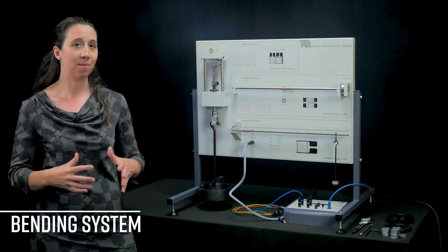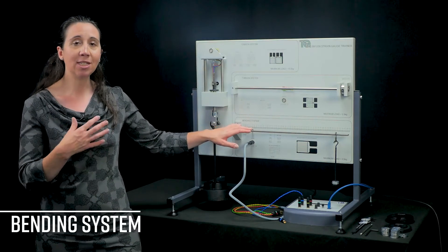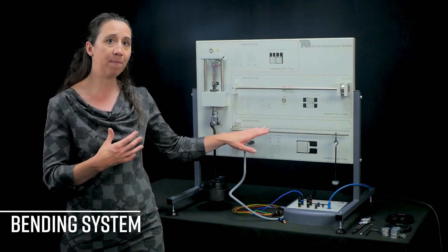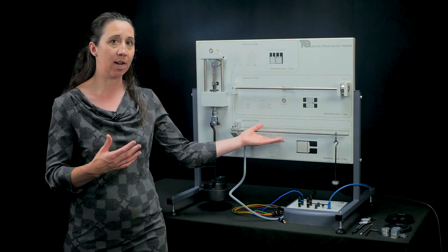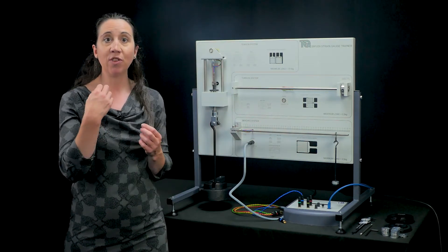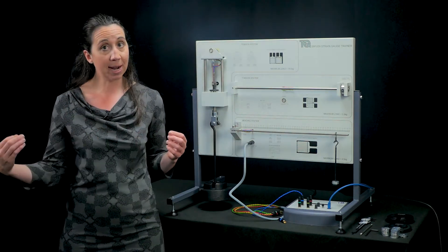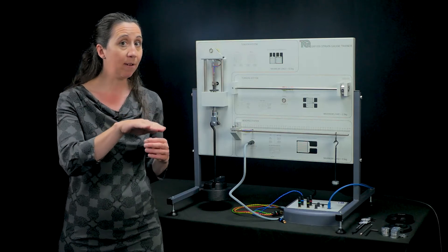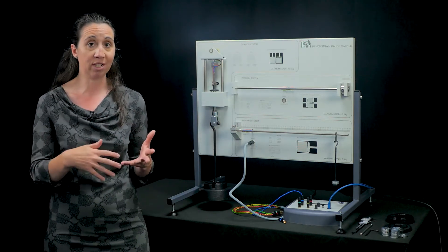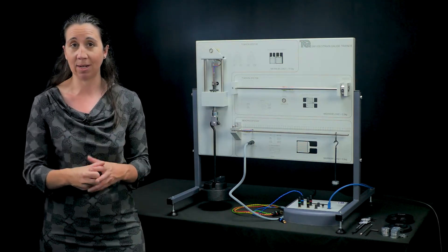Finally, we have the bending system that measures the tensile strain on the top of the beam and the compressive strain underneath the beam. In the real world, you might think of an aeroplane wing, swimming pool diving boards, shelf supports, bridges and balcony supports on buildings.